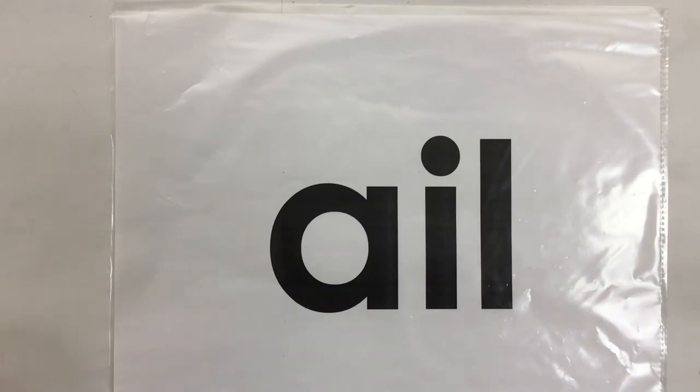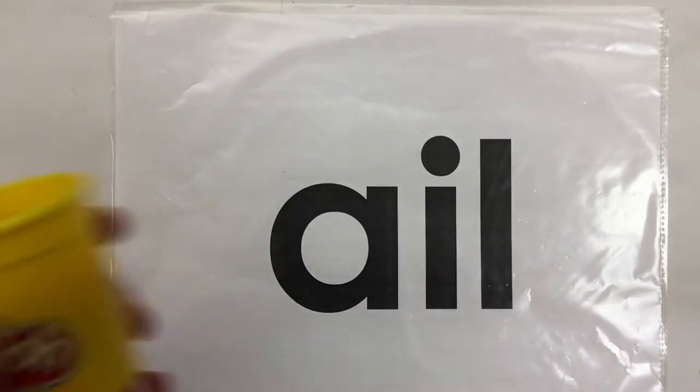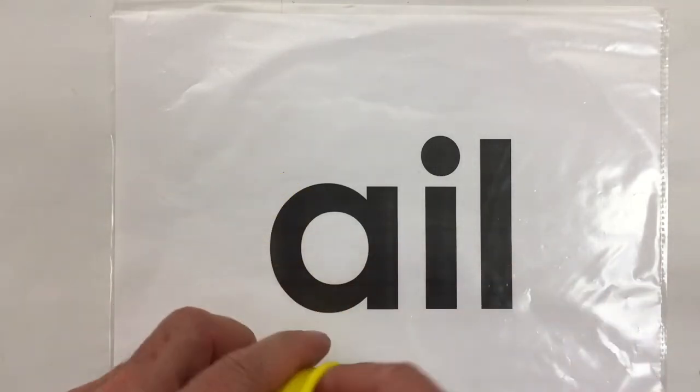Hi, it's Mr. C here. Today we're going to look at the word family ending A-I-L, which makes the sound 'ail'. I've got my play-doh here. Let's cover the letters.